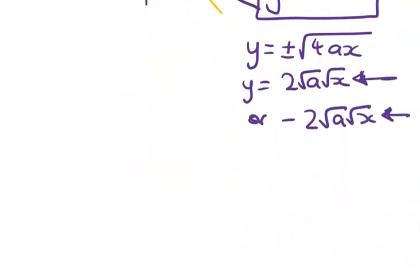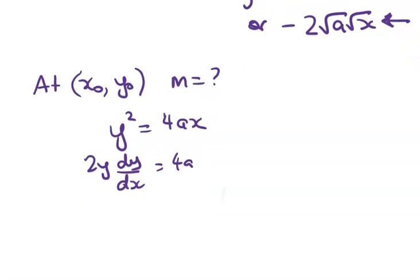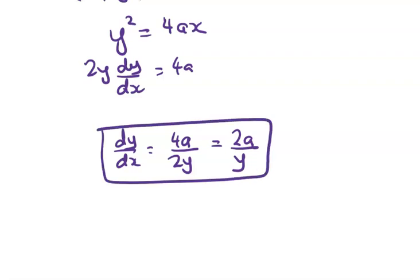So let's work with the first tangent first. So at x naught, y naught, we have to find the gradient. I'm going to find the gradient by using implicit. So we've got y squared is equal to 4ax. 2y dy by dx is equal to 4a. That gives me dy by dx anywhere on the curve is equal to 4a over 2y, which is 2a over y.